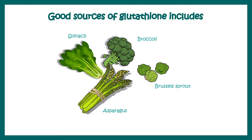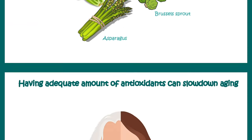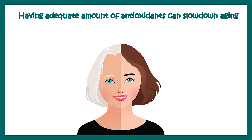Good dietary sources of glutathione include spinach, broccoli, Brussels sprouts, and asparagus. We need to ensure we include these foods in our diet in order to combat ROS.